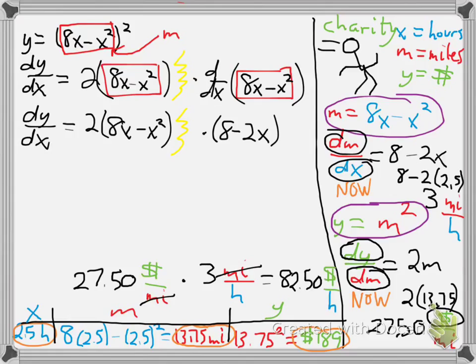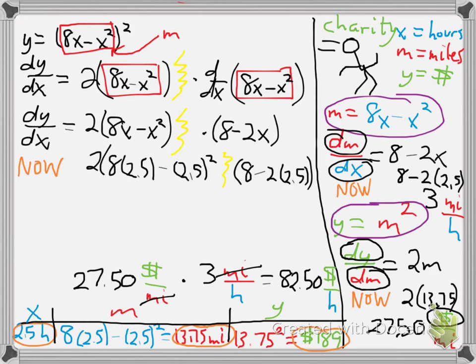Now let's tie this back to when we took the derivative using the chain rule early on. We really want to know now, at the 2.5 hour mark, what is this derivative. So we plug in 2.5 for x. And this becomes $27.50 times 3, which is familiar to us. $27.50 was the dollars per mile in our word problem. 3 was the miles per hour.